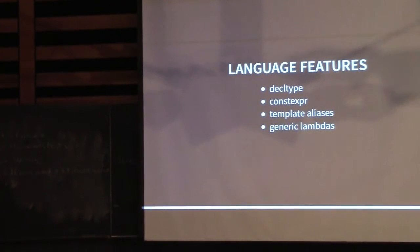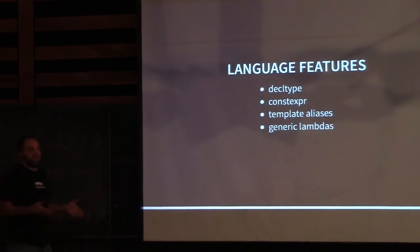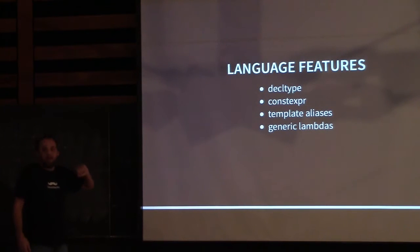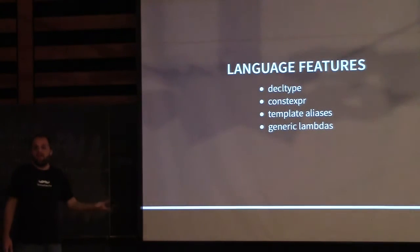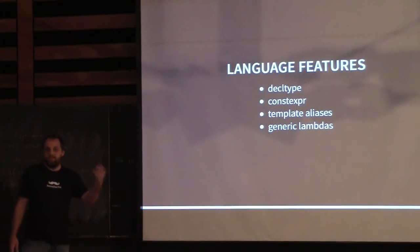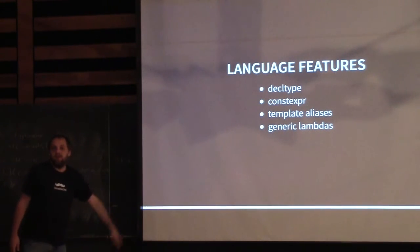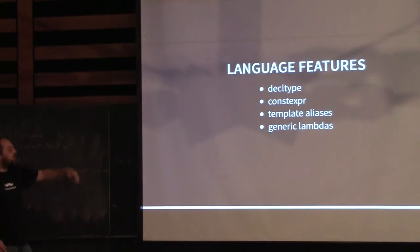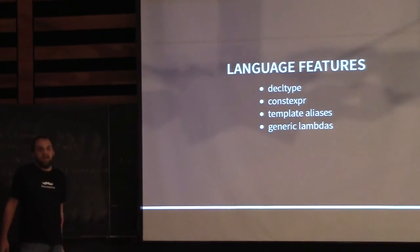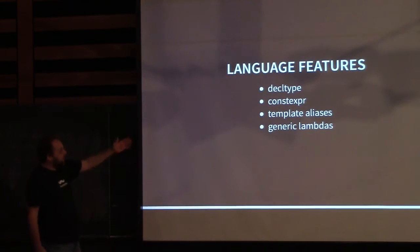Some new C++11 language features help make traditional metaprogramming a lot easier. For example, decltype — we can take a regular expression and it will compute whatever the result type is, taking care of a lot of type computations done traditionally. Constexpr can take care of value computations and even some basic type computations. Template aliases take care of a lot of the typename::type boilerplate, making that much cleaner.